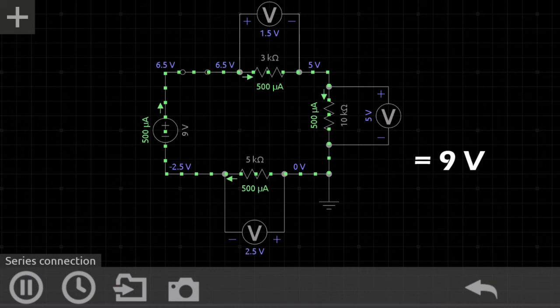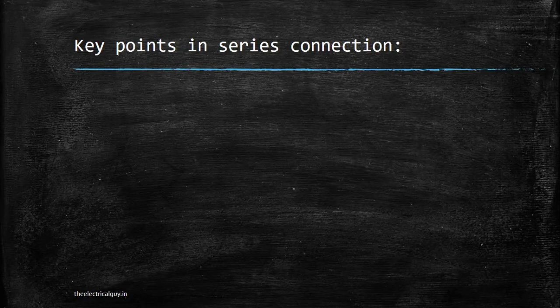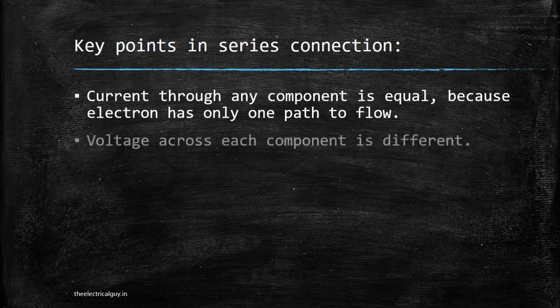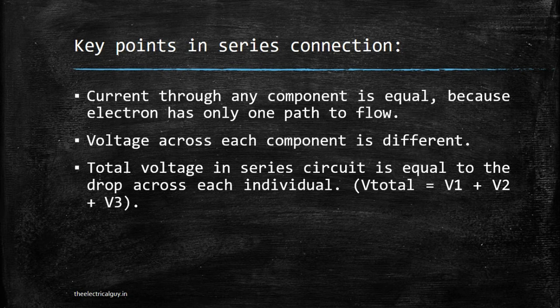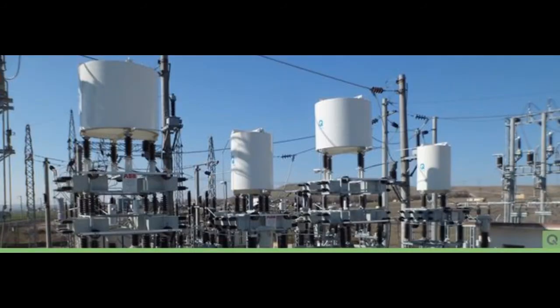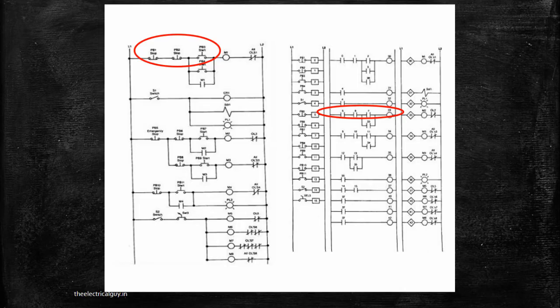The key points of series connection are: current through any component is equal because electrons have only one path to flow; voltage across each component is different; and total voltage equals the sum of voltage drops across each individual resistance. Series connection is generally used where voltage division is needed, reactors in power systems are connected in series, and most logical wiring where multiple conditions are checked is connected in series.